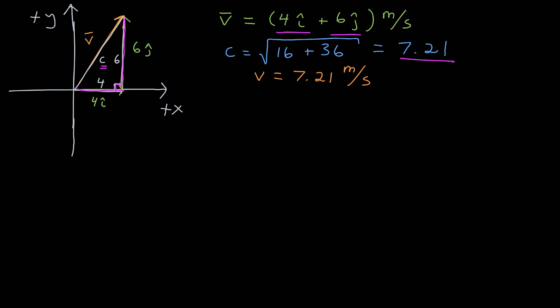The magnitude of my velocity vector, then, is 7.21 meters per second. I still need to know a direction for that, which is easy enough if I can find that angle theta.